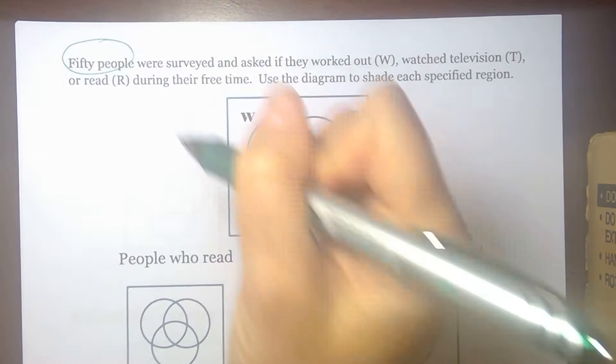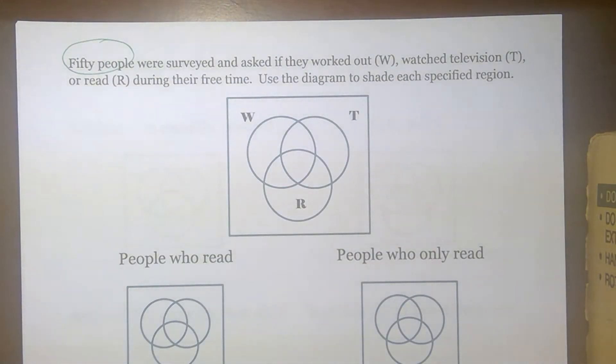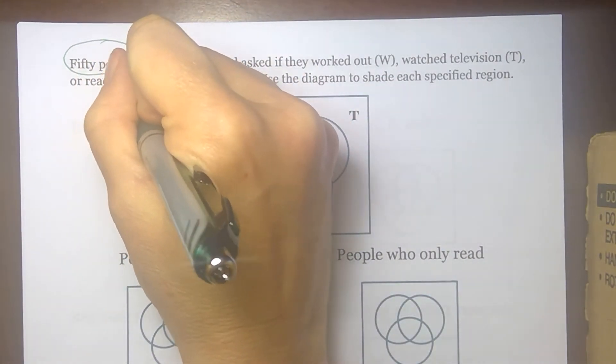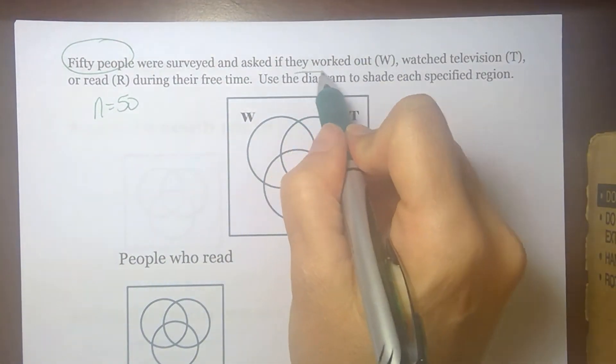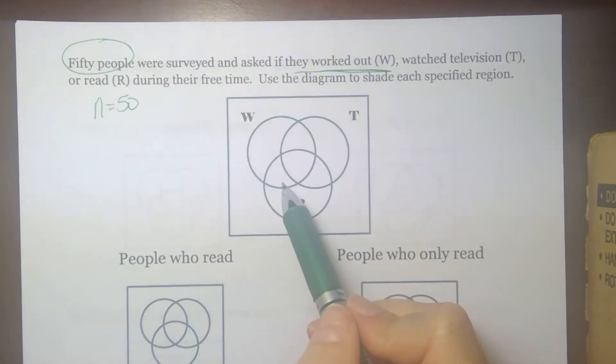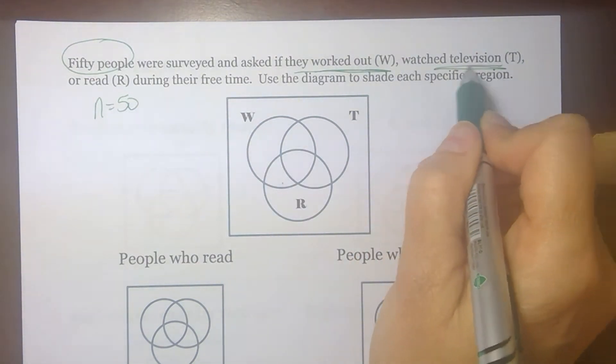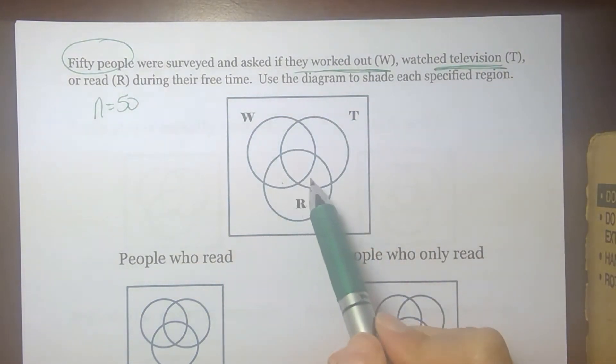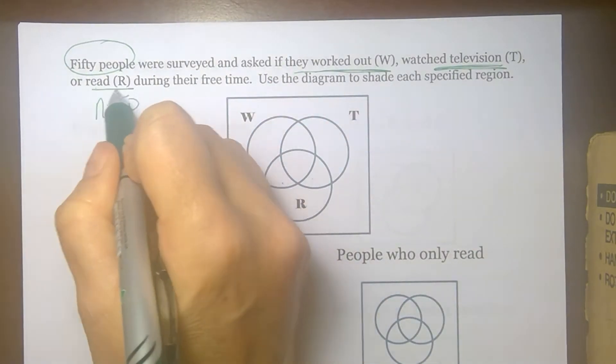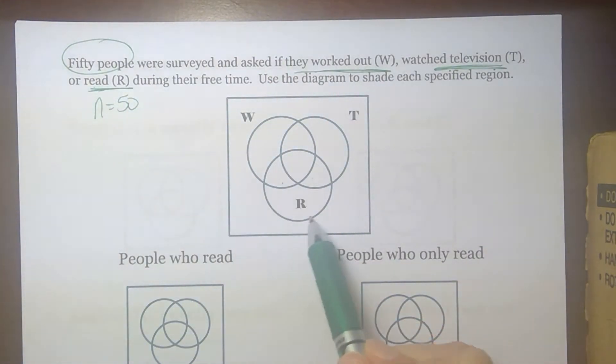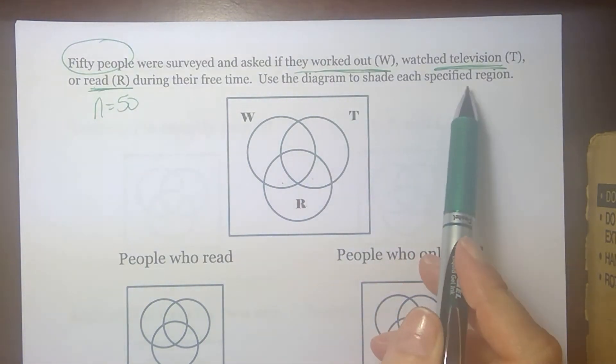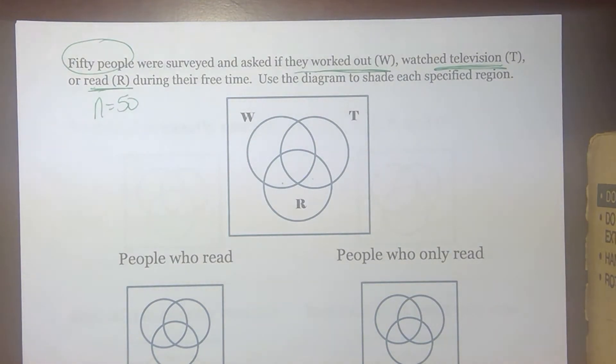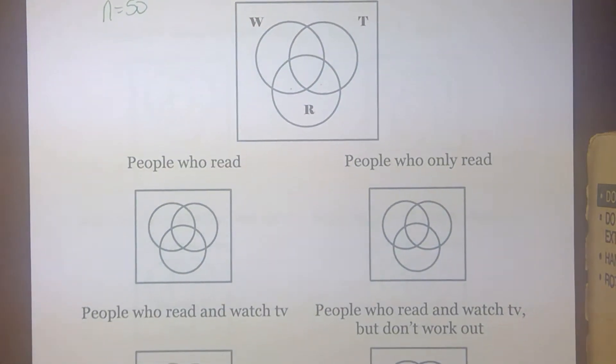50 people were surveyed. So there are 50 people total in my universal set. The number of people total we have is 50. They're asked if they work out and if they work out, they're in the W loop. If they watch TV and if they watch TV, they're in the T loop or if they read during their free time. And if they read, they're in the R loop. Now we're supposed to use the diagram to shade each specified region. It doesn't give us any numbers to fill in. So right now we are just shading regions and we're giving the notation.